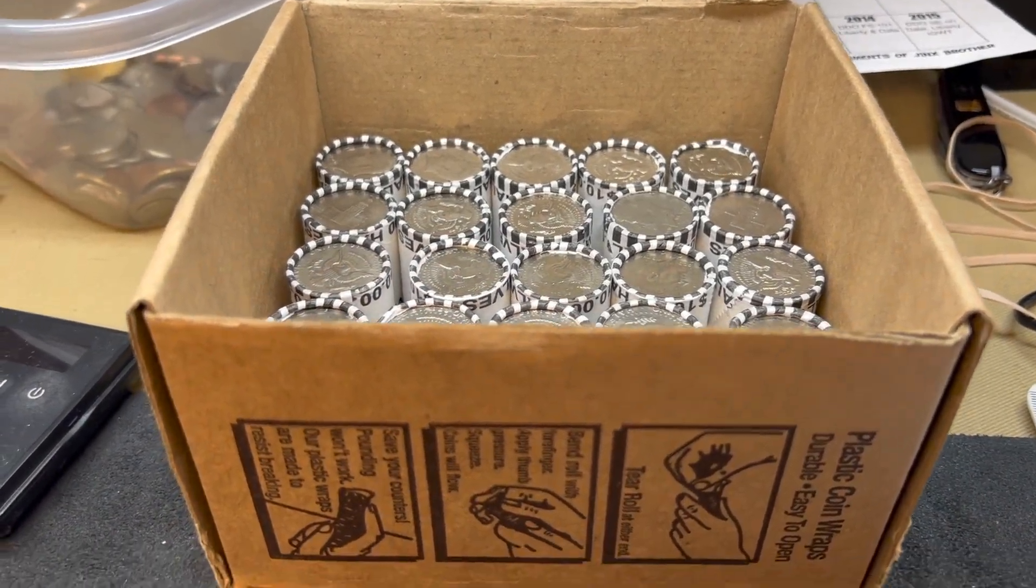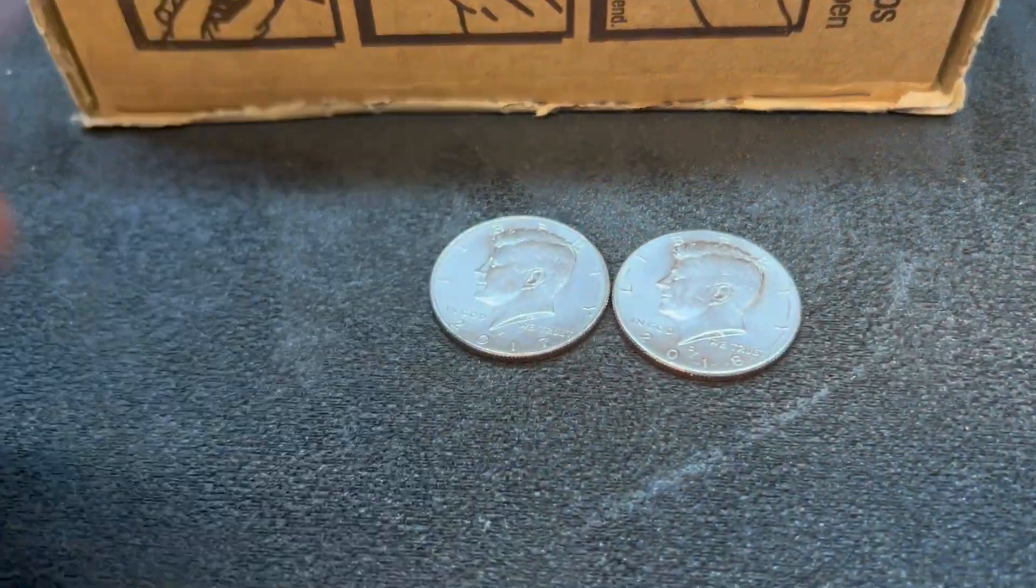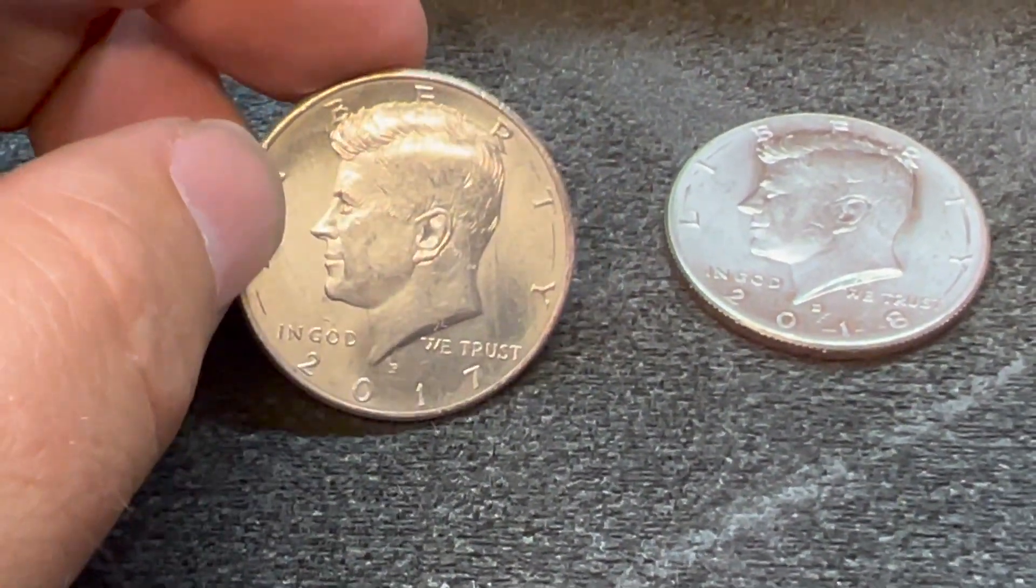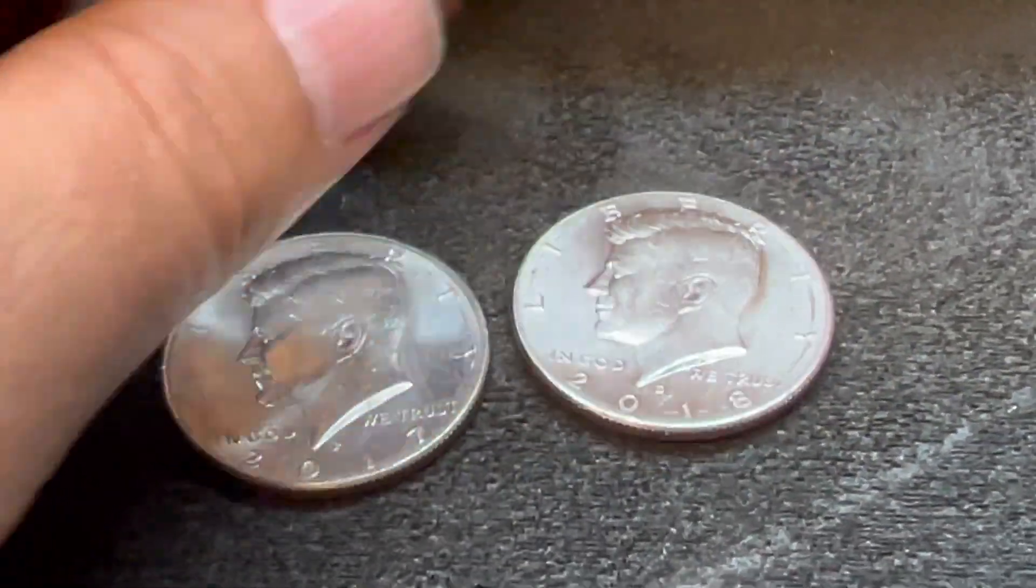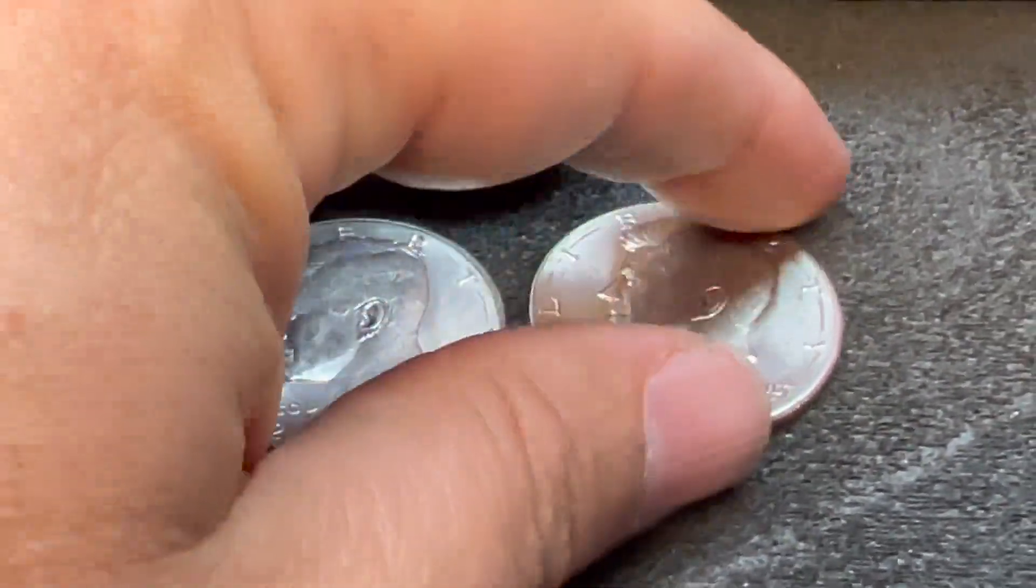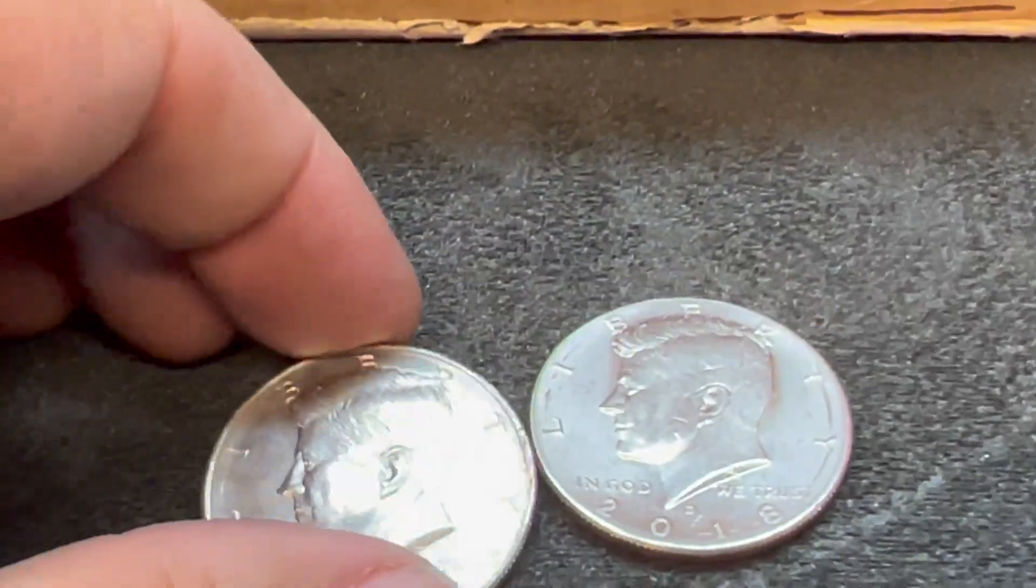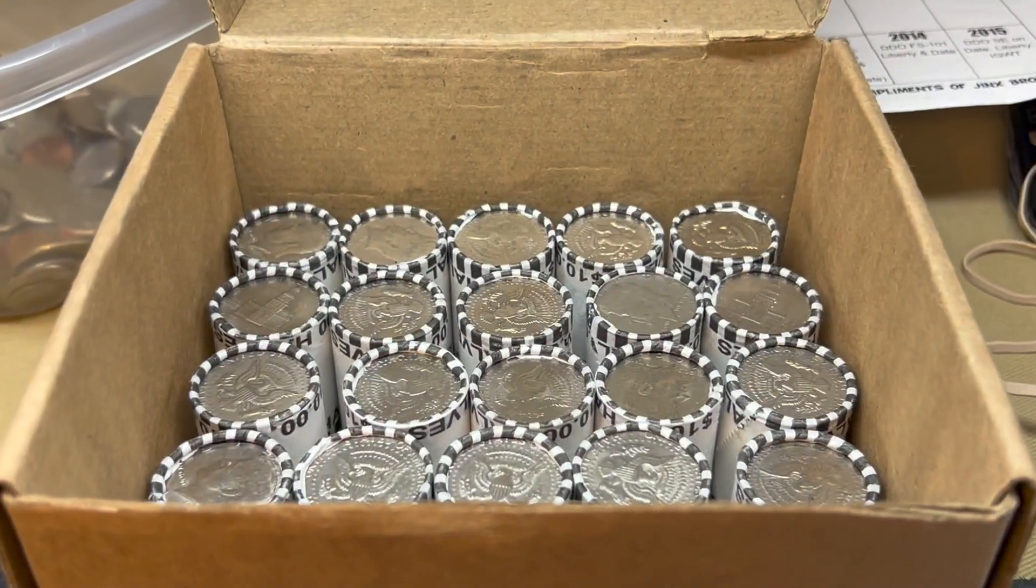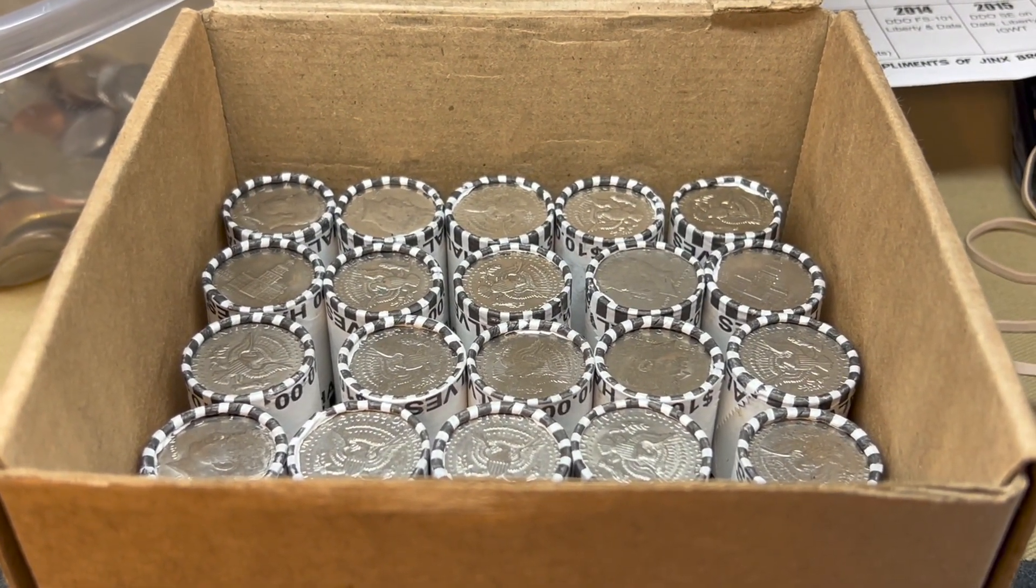Doing a little half box check in here and it is not looking pretty. We have two lonely NIFCs to speak for the first half of this third box. 2017 was a Philly and a 2018 Denver. And both of them look like they got a little ring of death on them. So hopefully in this third box, we get a little love in the bottom rack.